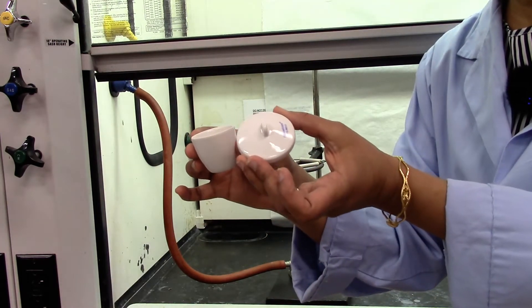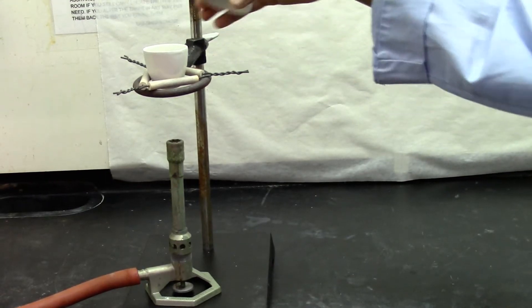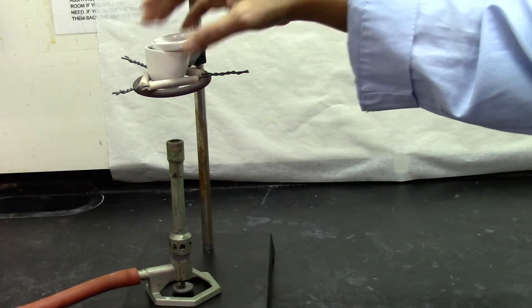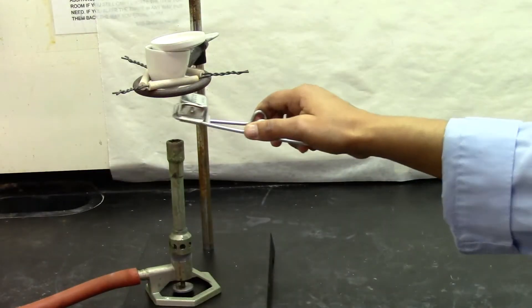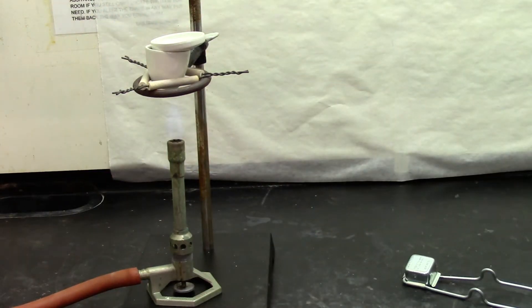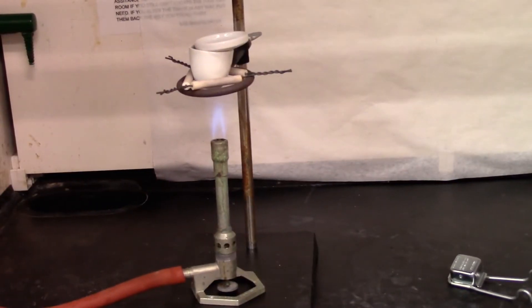That's my crucible with the lid. I'm going to place it on the clay triangle. So I'll cover it and then turn on the gas. Make sure to have a blue flame.